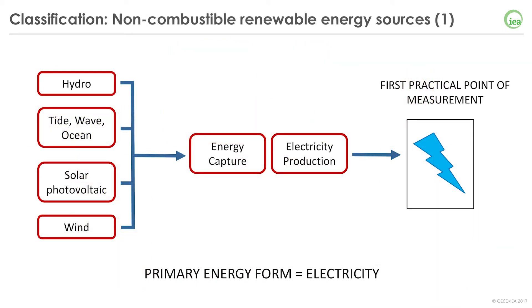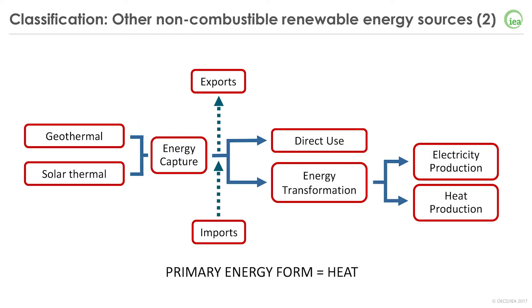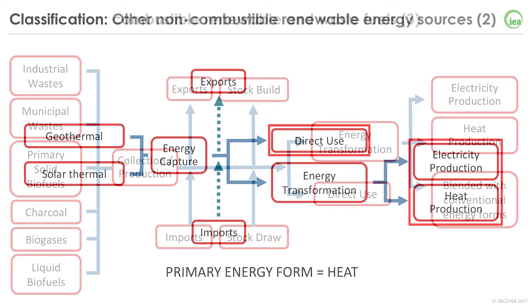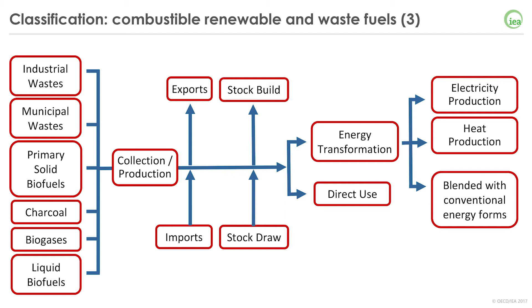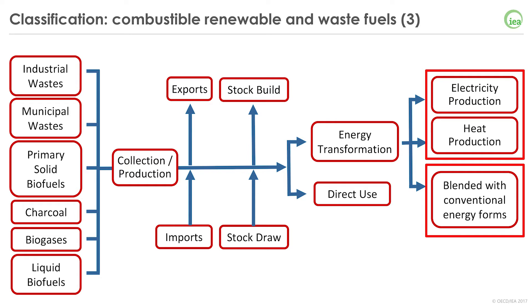For non-combustible renewable energy sources with a primary energy form of electricity, there is no trade and no stock changes. The amount of energy produced is defined as the amount of electricity generated, because the first practical point of measurement is after electricity production. The second group — non-combustible renewable energy sources with a primary energy form of heat — includes geothermal and solar thermal. The heat is captured and then can be used directly on site or in the transformation process. For combustible renewable and waste fuels, all products are combustible energy commodities which can be traded and stocked, and their consumption will be either transformed to a secondary product, blended with other sources, or used directly in an end-use application.